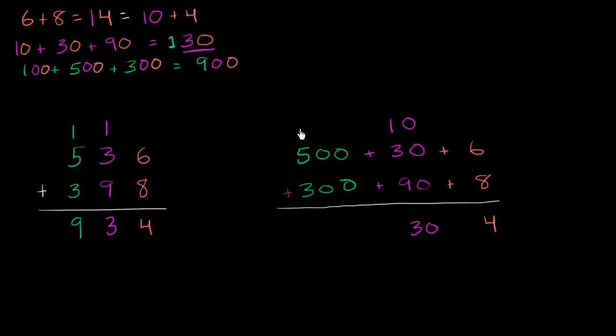So we could put the 100 right over here. Notice, we've just carried a 1, but essentially we've carried a 100, because we put a 1 in the hundreds place. 10 plus 30 plus 90 is equal to 100 plus 30. That's all we've done.